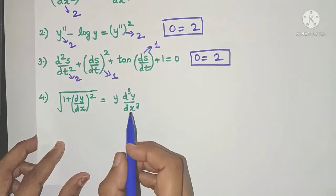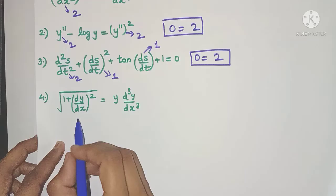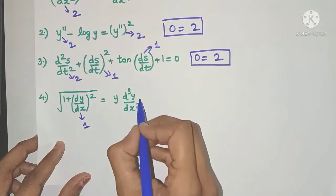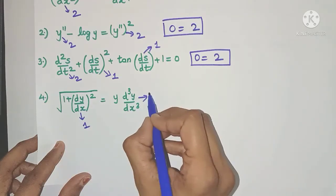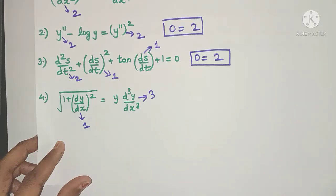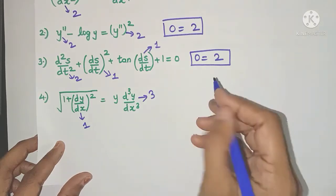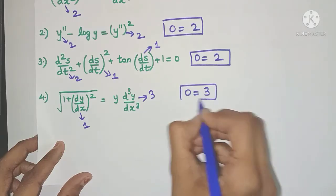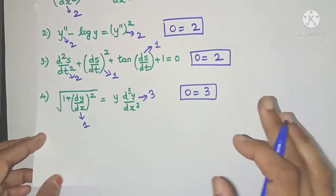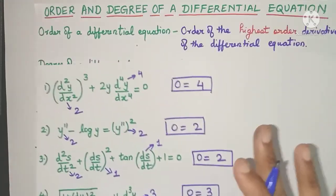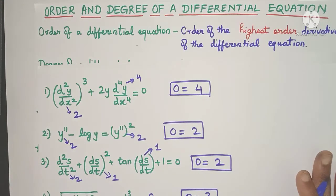In the last example, there is a first order derivative and a third order derivative. The highest order derivative is 3, so 3 is the order of the entire differential equation. I hope you now understand how to find the order of a differential equation.